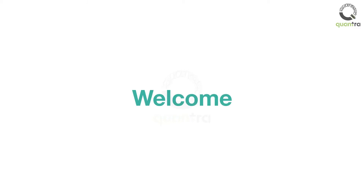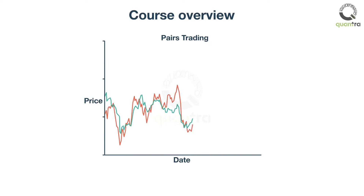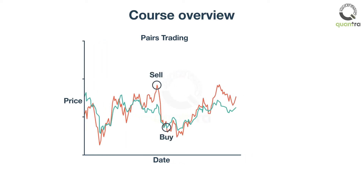Welcome to this course on Statistical Arbitrage. This course covers the basics of a pairs trading strategy on a commodity pair. The strategy is covered in a step-by-step manner and implemented in Python and Microsoft Excel.